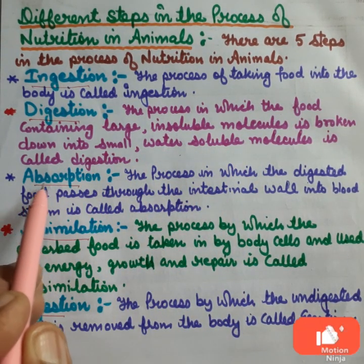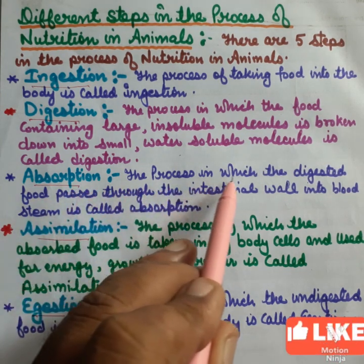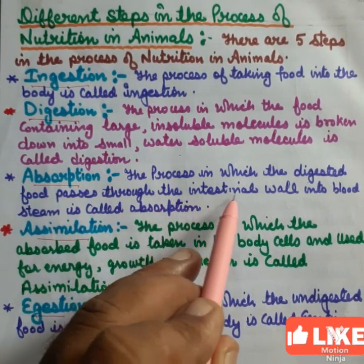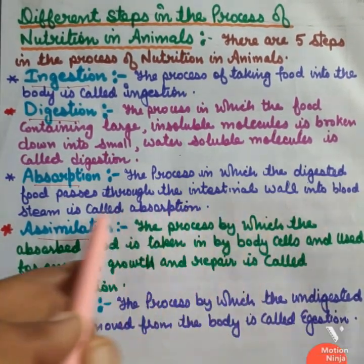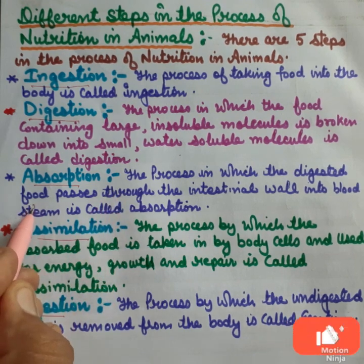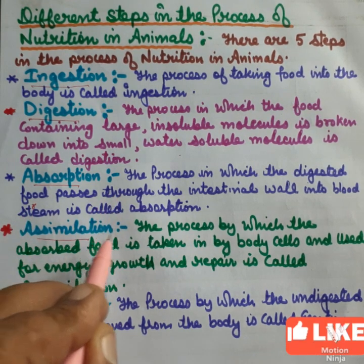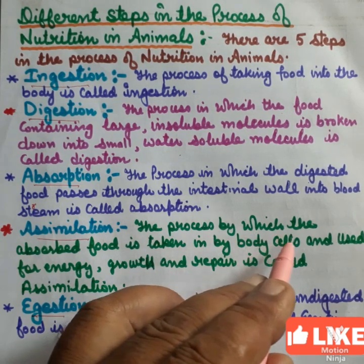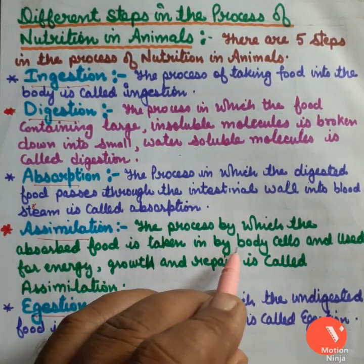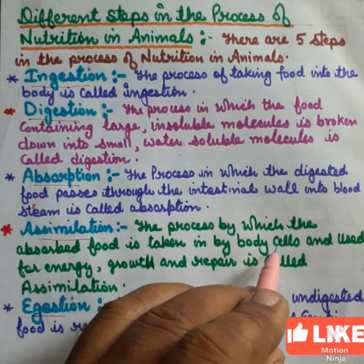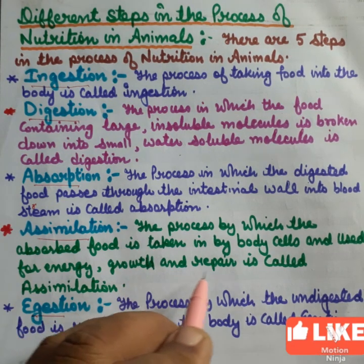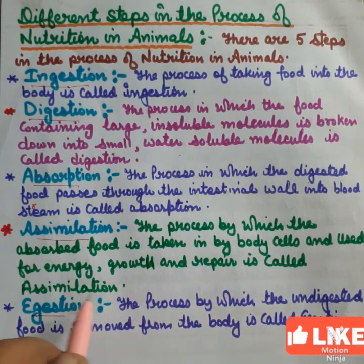Third is absorption. The process in which the digested food passes through the intestinal walls into the bloodstream is called absorption. Fourth is assimilation. The process by which the absorbed food is taken into the body by blood cells and used for energy, growth, and repair is called assimilation.